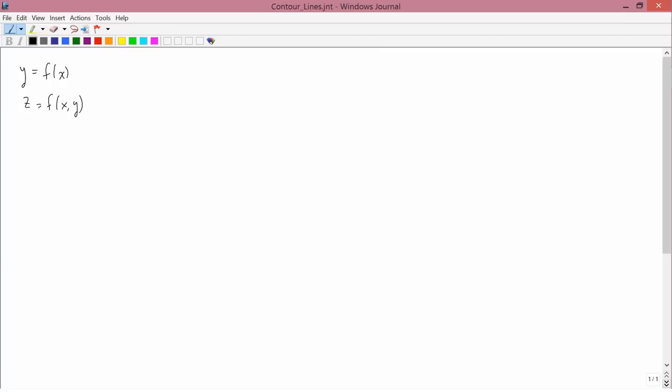And we're not going to be discussing marginals and averages of such functions, but we do need to figure out how to graph them. So with an example, suppose z equals 100 minus x squared minus y squared.